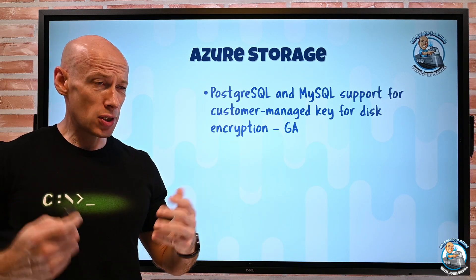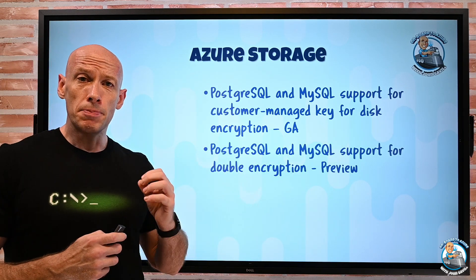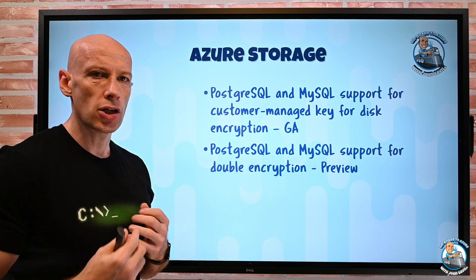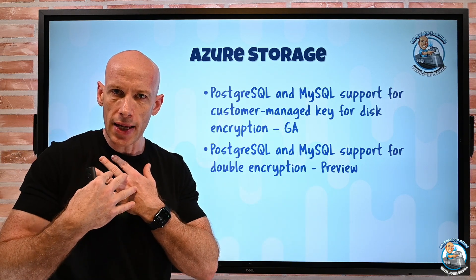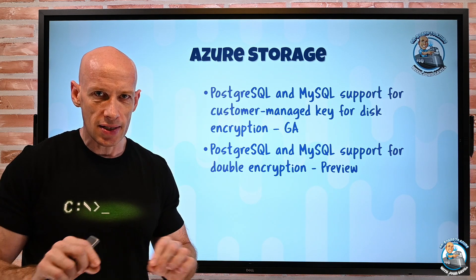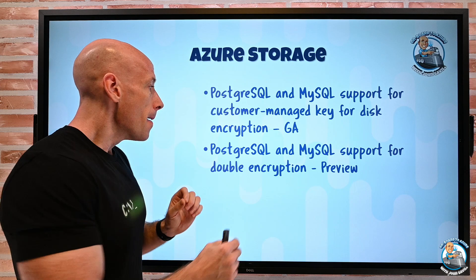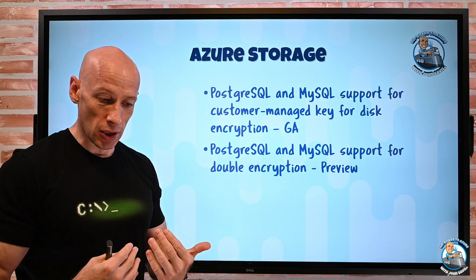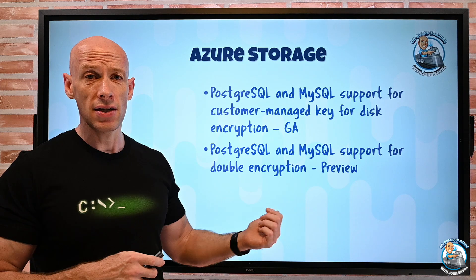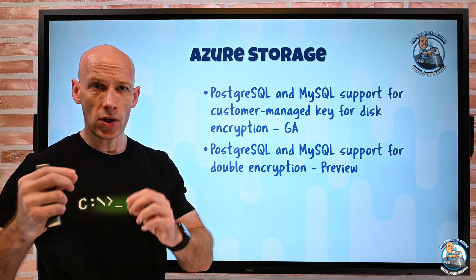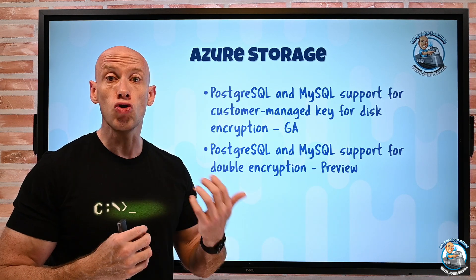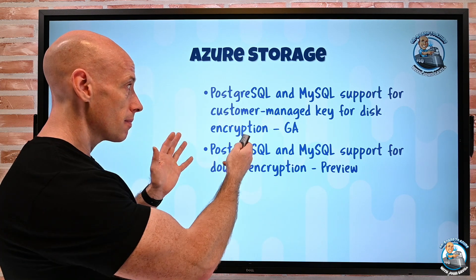Also this week, for those same two databases but in preview, they now support double encryption. I can still have the regular encryption using a system-managed or customer-managed key, but on top of that I can turn on a second level of encryption that uses a system-managed key. The primary can still be customer-managed, so it's two layers of encryption. The goal is to have variation in the encryption methods leveraged. This is not on by default and is in preview, and turning it on causes a 5% to 10% throughput drop, so there will be a performance impact.